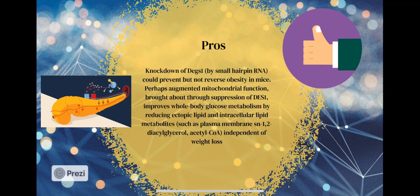Knockdown of DISM1 by small air pain RNA could prevent but not reverse obesity in mice. Preheat augmented mitochondrial function brought about through suppression of DISM1 improved whole body glucose metabolism by reducing ectopic lipid and intracellular lipid metabolites, such as plasma membrane 1,2-diacylglycerol, independent of weight loss.